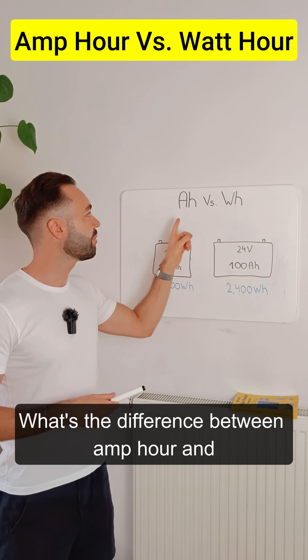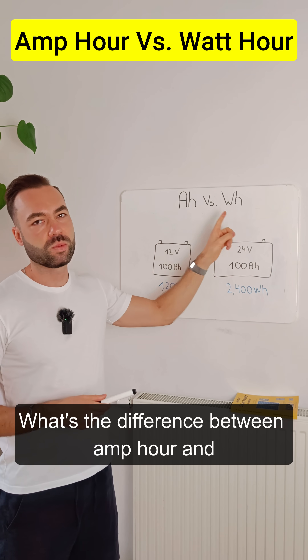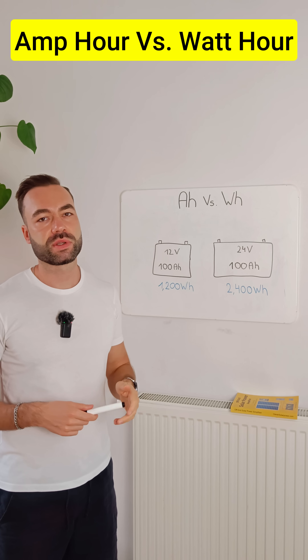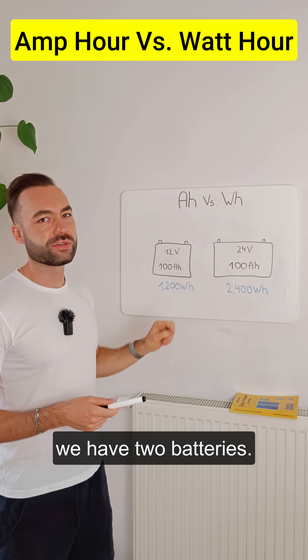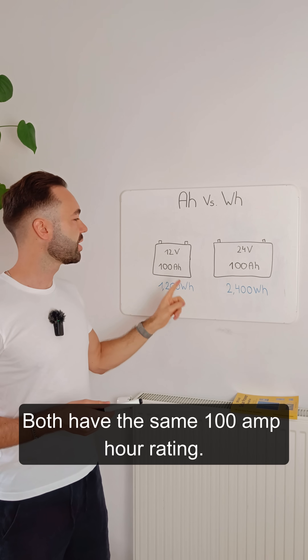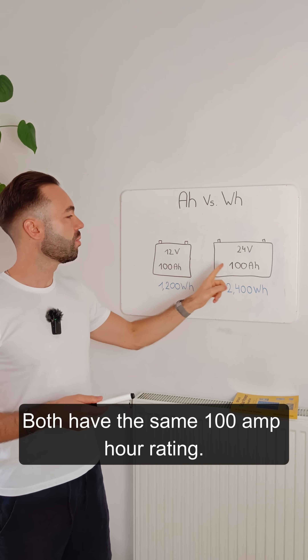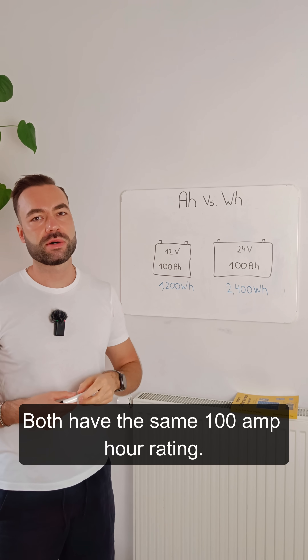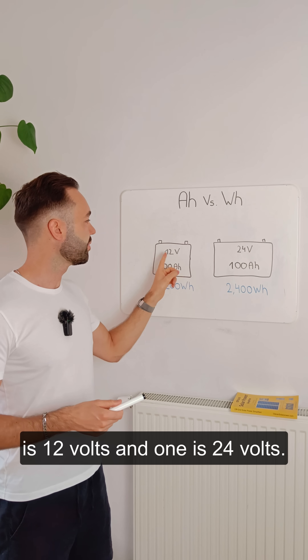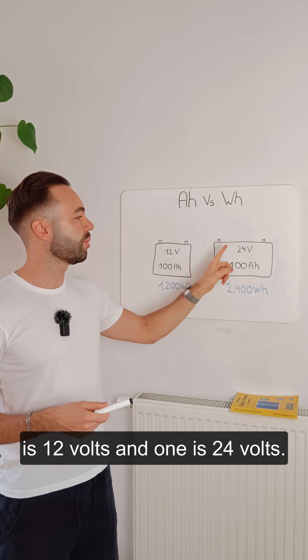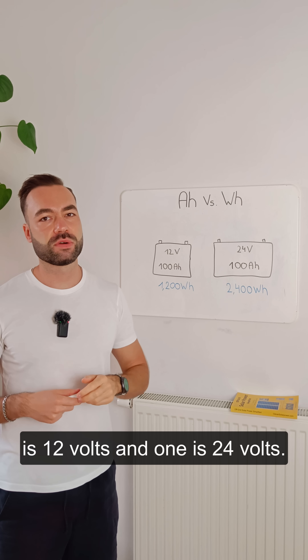What's the difference between amp hour and watt hour? For example, we have two batteries — both have the same 100 amp hour rating, but one is 12 volts and one is 24 volts.